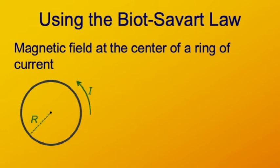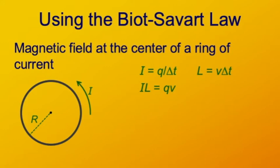I is the quantity of charge that moves past some point in the ring in a given period of time. It's simplest to think about the total quantity of moving charges in the ring, where delta-t is the period of revolution of the charge carriers. L is the distance traveled in time delta-t, so v is the speed of the charge carriers. I times L — current times length — equals qv. The quantity qv appears in the Biot-Savart formula: μ₀qv cross R-hat divided by 4πR².